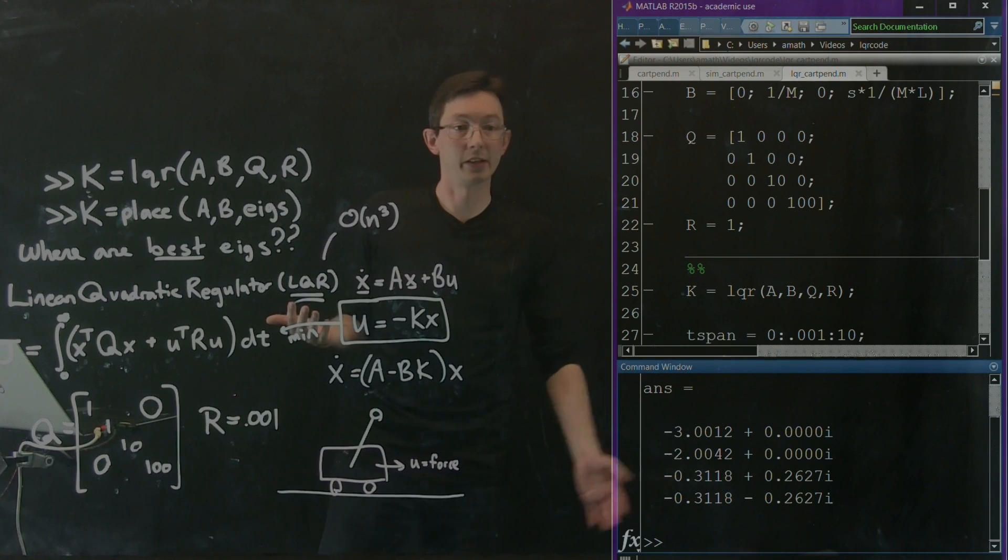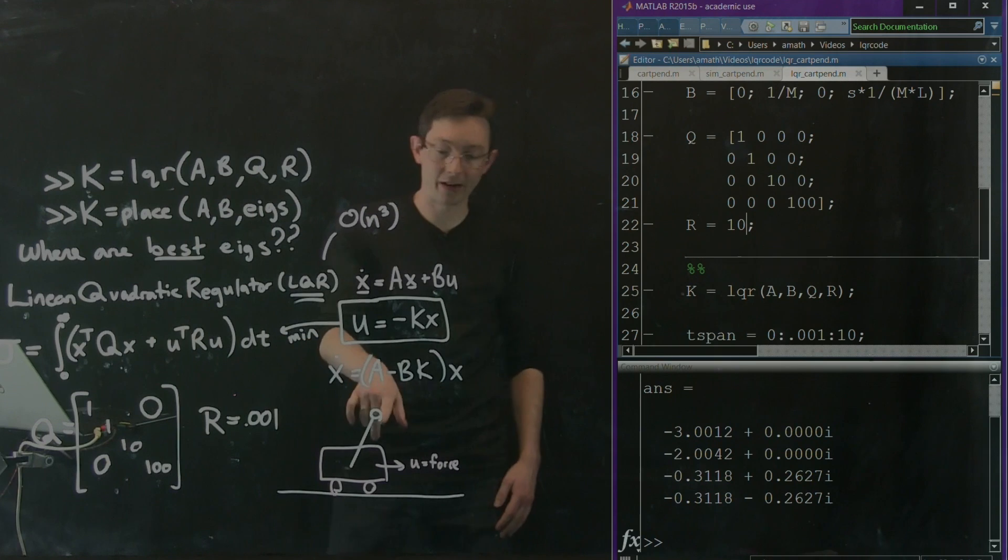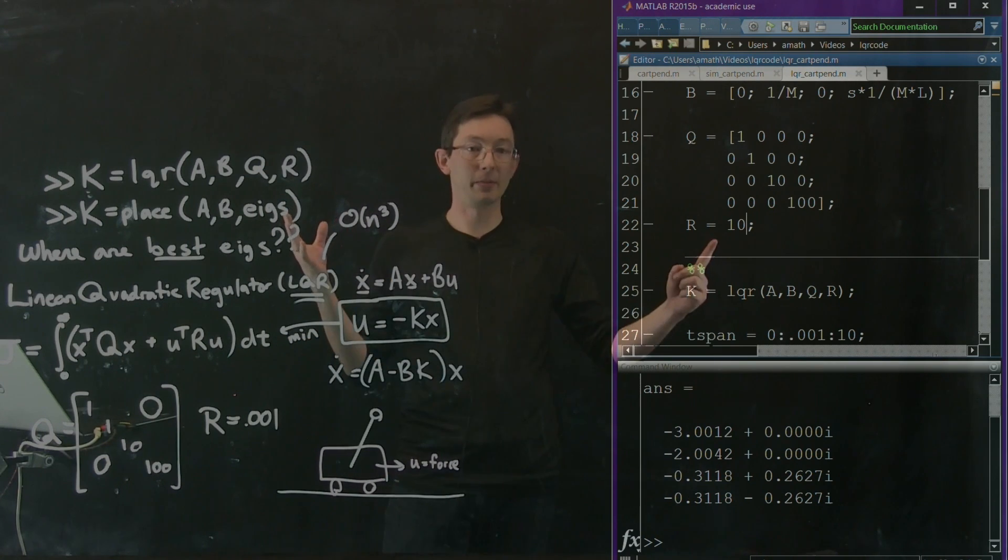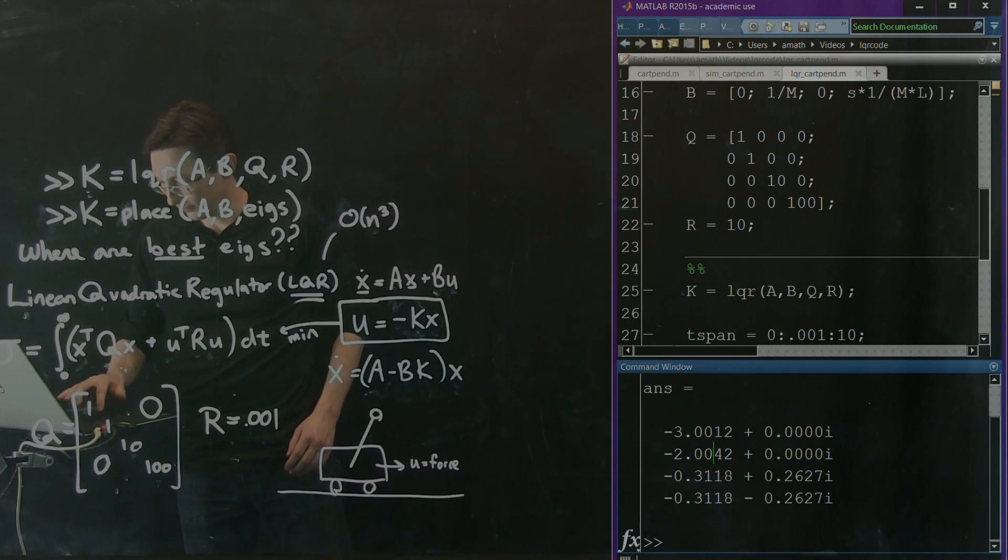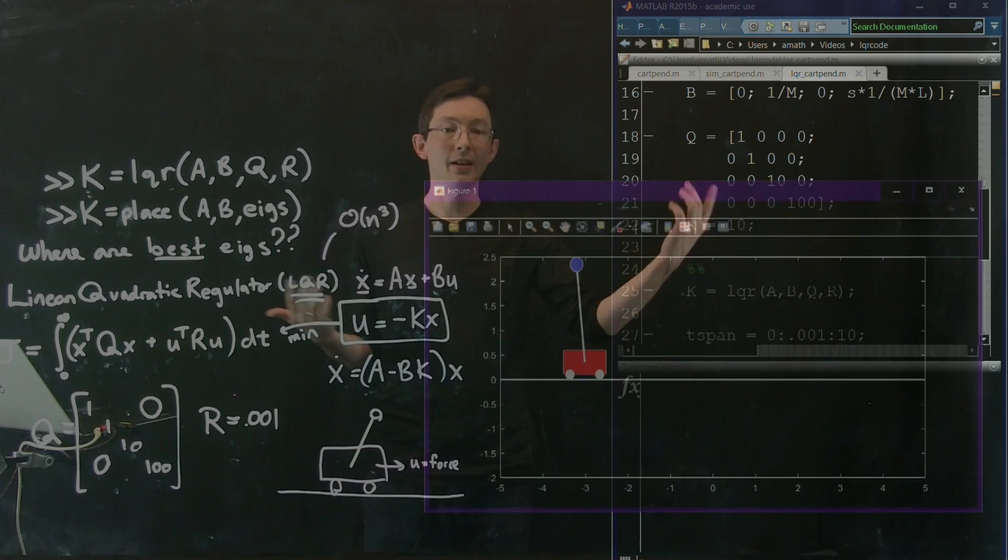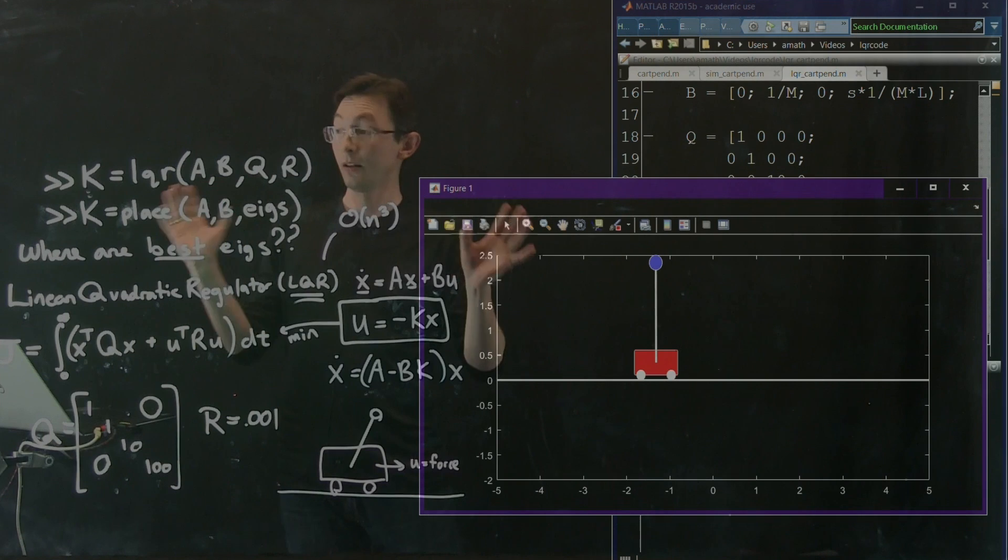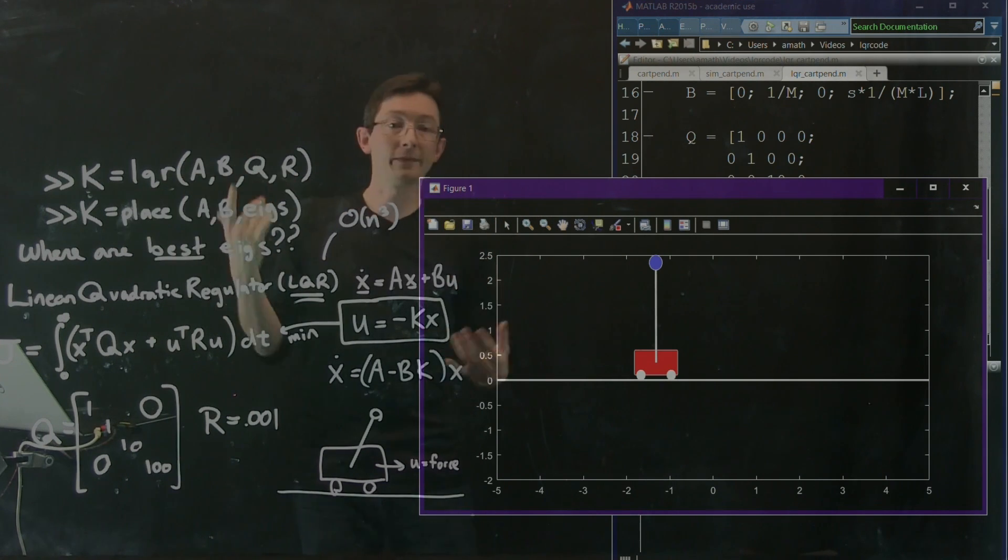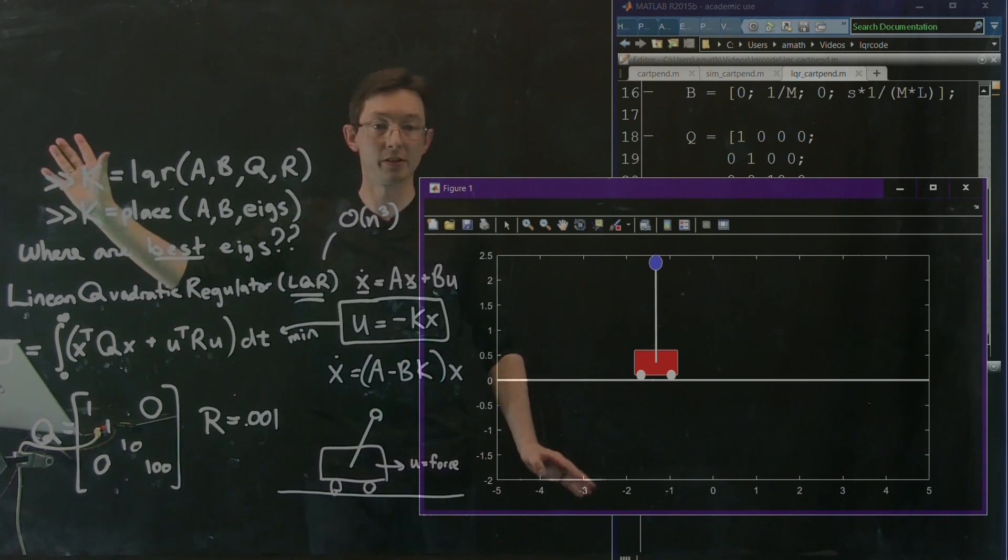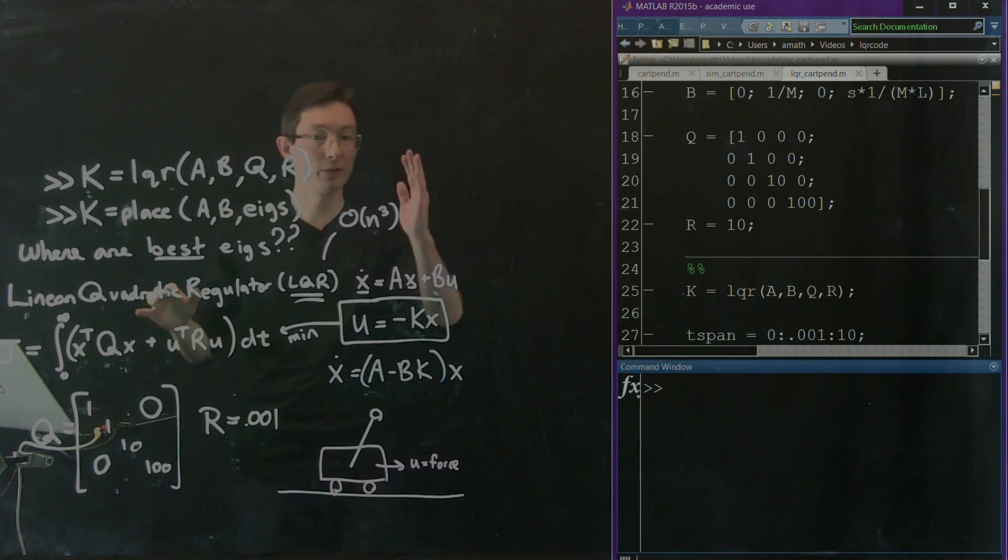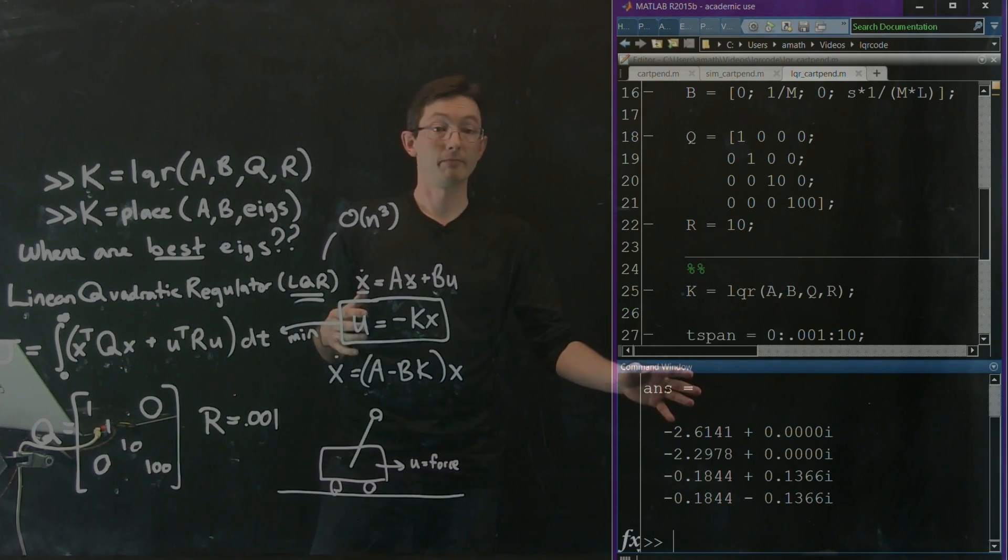I could make my control really expensive. I could say, well, I've got a wimpy motor and electricity, super expensive. So I'm going to really penalize control expenditure. And all I have to do is change that one number and everything else is exactly the same. That's what I love about control design, especially in MATLAB is if I want to try a bunch of these things, all I have to do is change a couple of numbers, nothing else changes. And notice it was pretty sluggish and my eigenvalues are now even less damped.